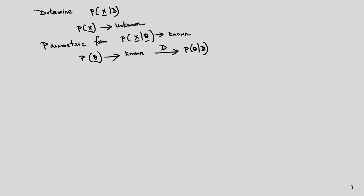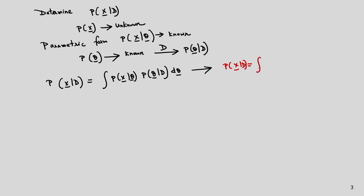So p(theta) is converted into p(theta|D). We can determine p(x|D) as the integral of p(x|theta) times p(theta|D) d-theta. To derive this, p(x|D) can be written as the integral of the joint density p(x, theta|D) d-theta, which factors into p(x|theta) times p(theta|D).